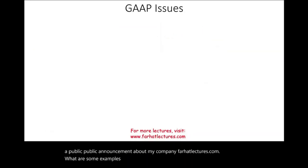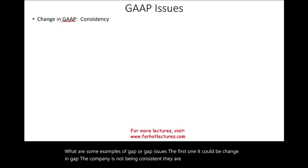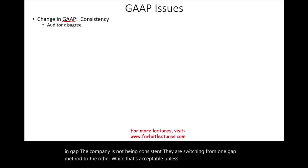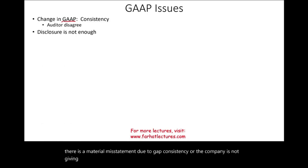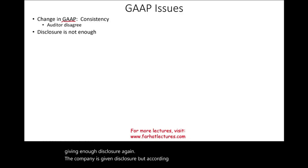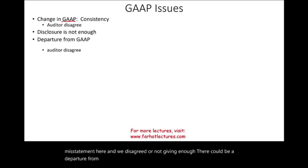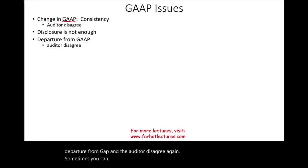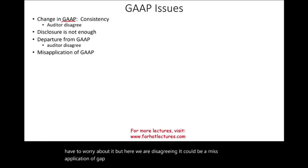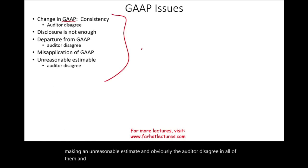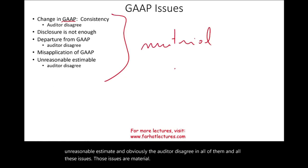Some examples of GAAP issues include: a change in GAAP where the company inconsistently switches from one GAAP method to another and the auditor disagrees; insufficient disclosure where the auditor finds a material misstatement in the disclosures; a departure from GAAP where the auditor disagrees; and a misapplication of GAAP where GAAP is not being applied properly. Additionally, the company could be making an unreasonable estimate and the auditor disagrees. In all these cases, the issues are material and the auditor disagrees.